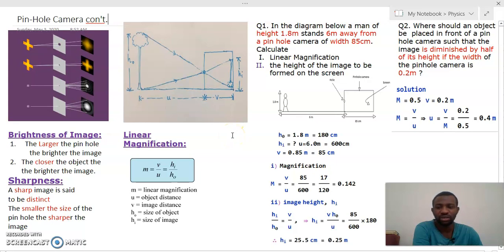Let's go ahead with our discussion. We look at the linear magnification in the pinhole camera. If you look at this diagram here, you see that we have u which is the object distance, we have v which is our image distance, we have hi image height and ho object height.